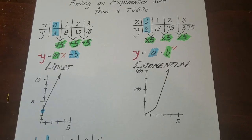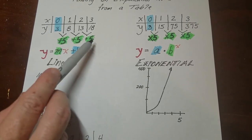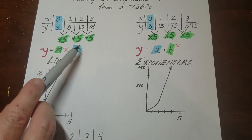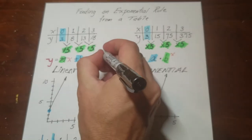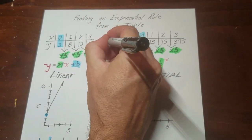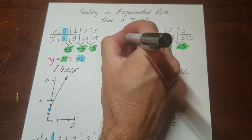y equals mx plus b, which means that the slope is what it's adding or subtracting by. And then the b term is where it started. So this formula, if I were to write it out, would be y is equal to 5x plus 3.